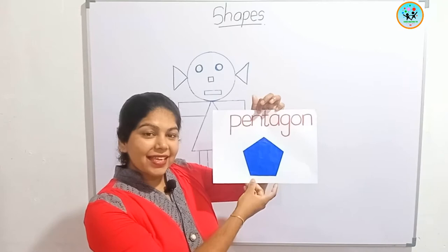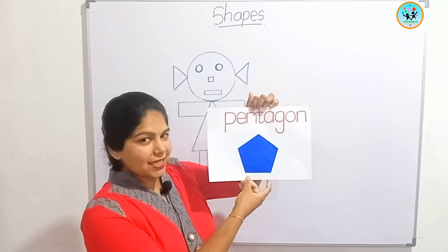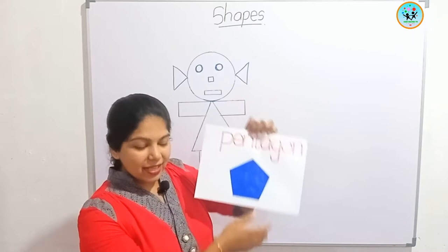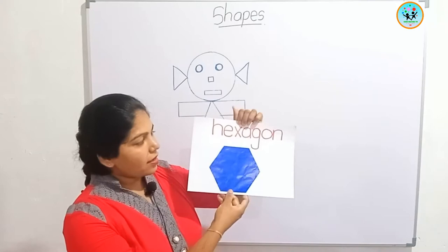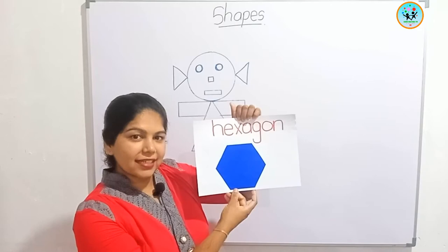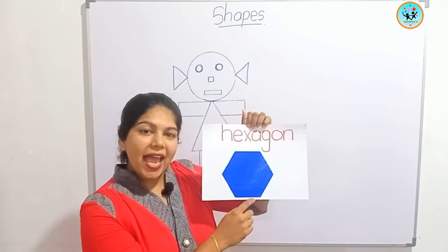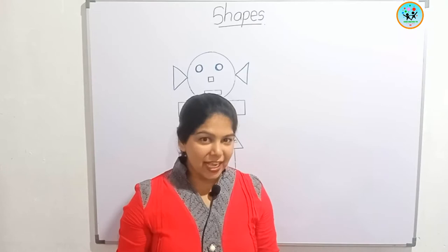This is a pentagon. Pentagon. What is this? Pentagon. This is a hexagon. Hexagon. What is this? Hexagon.